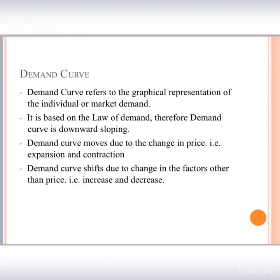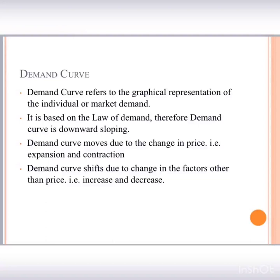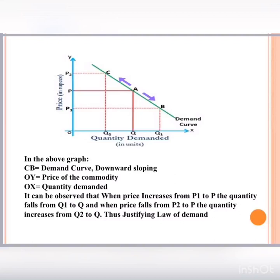Next is the demand curve. A demand curve is the graphical representation of individual or market demand — when we express demand in the form of a graph, it becomes a demand curve. The demand curve is based on the law of demand, and therefore it is downward sloping. It expands and contracts due to changes in price, and it shifts due to changes in other factors.